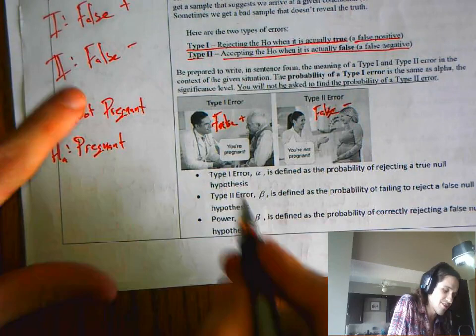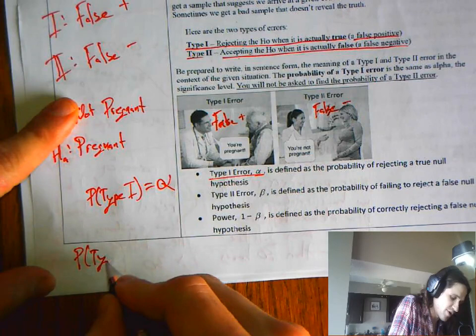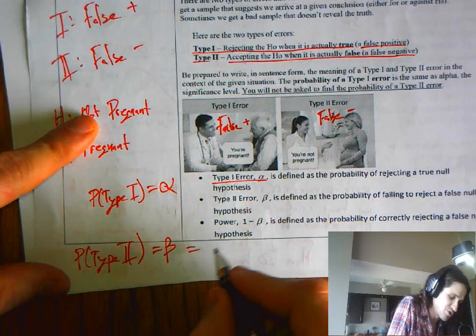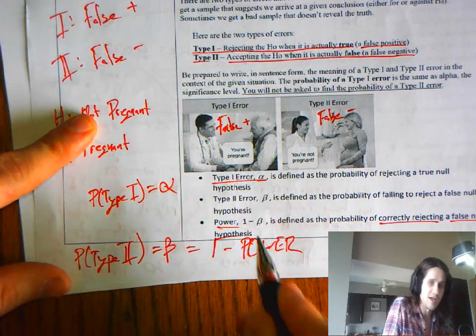Many ways to think about this. Type 1 error is alpha. The probability of type 1 error is alpha. Probability of type 2 error, often called beta. I don't care about that. Probability of type 2 error is 1 minus the power. The power is defined as the probability of correctly rejecting a false null hypothesis. So, that's the next hard idea we've got to deal with.